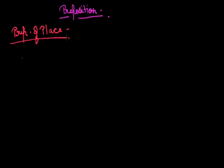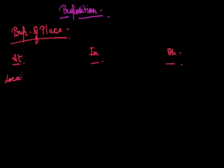Talking about preposition of place, first we differentiate between 'at', 'in', and 'on' — when each is used in the context of place. The preposition 'at' indicates the location of something, speaks about position, or towards the direction of something.